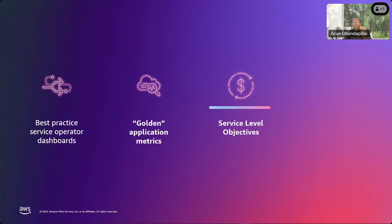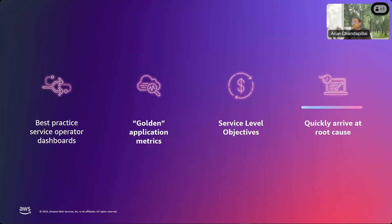Today, businesses gauge the happiness of their customers not by measuring the CPU or memory of their infrastructure, but by measuring the Service Level Objectives promised to customers. With Application Signals, you now have a native way to monitor and report on SLOs. Lastly and most importantly, the ability to troubleshoot faster — because of all these things coming together, CloudWatch Application Signals gives you the ability to arrive at the root cause of an incident pretty fast, in just a few clicks.